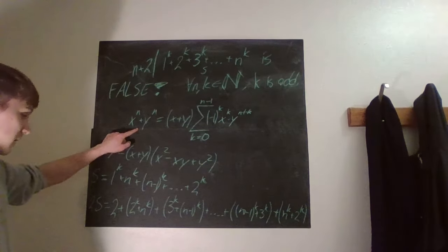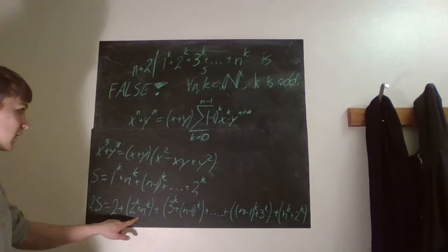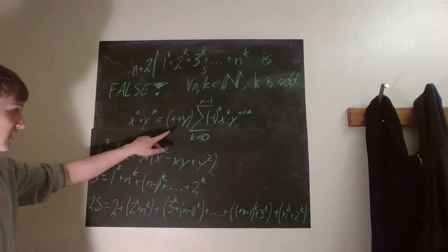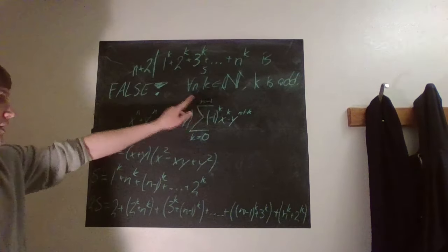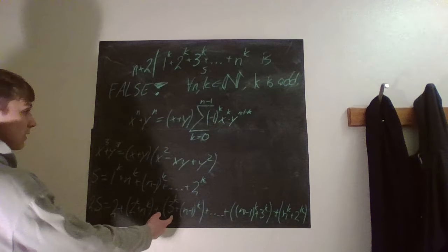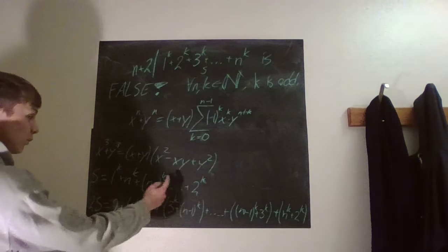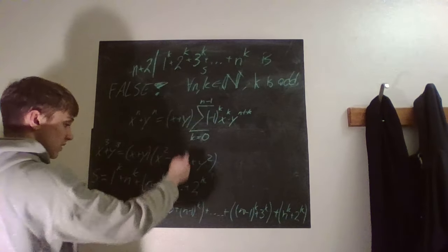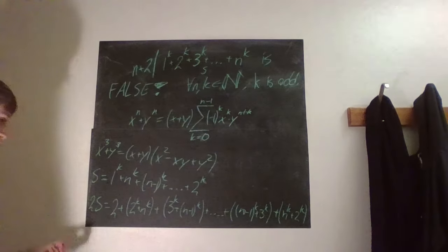So what does this mean? Well, we can factorize 2 to the power of k plus n to the power of k, since k is odd, as 2 plus n times this whole thing there. And for this one we can do the same thing. So now x is 3 and y is n minus 1, so then we have 3 plus n minus 1, which is also n plus 2.